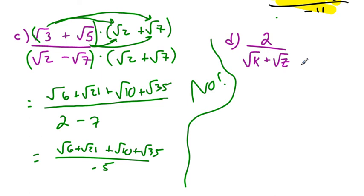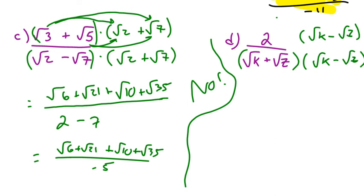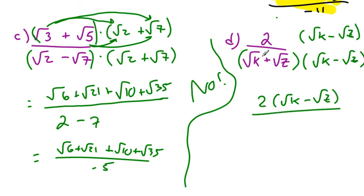Last but not least, Part D. We want to get rid of the radical, so I'm going to multiply by its conjugate: radical K minus radical Z, over radical K minus radical Z. I'll leave it as 2 times the quantity radical K minus radical Z in the numerator. For the denominator, since we're multiplying conjugates, we square the first term to get K, and square the second term to get Z. So the answer is 2 times the quantity radical K minus radical Z, all over K minus Z.